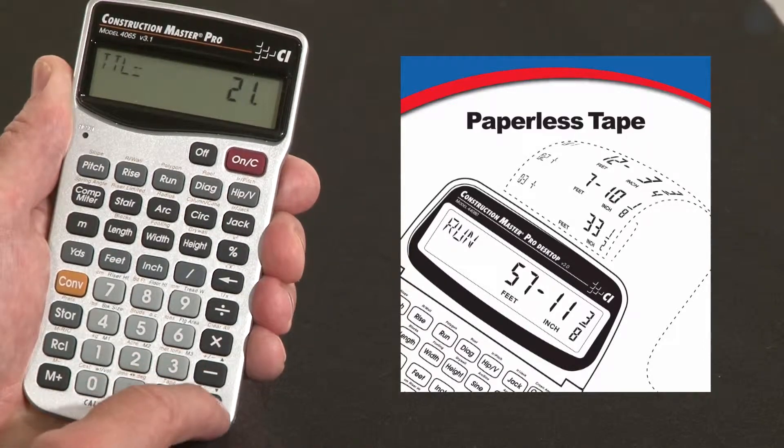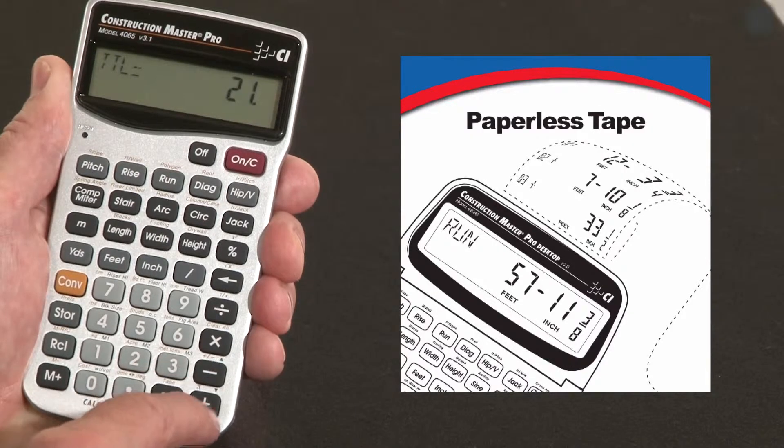The plus and minus keys have little arrows up and down over them. Using these two keys, I can go up and down that list of entries.